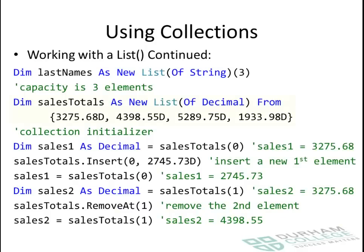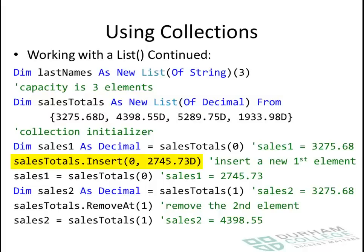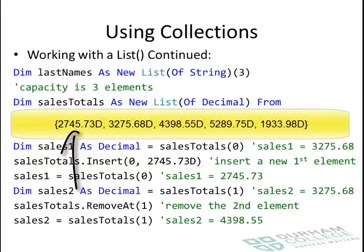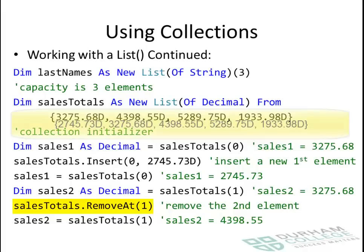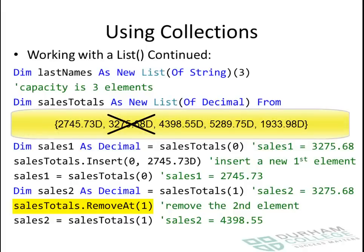Here's a fairly long example that goes over the next two slides. It's looking at a sales totals list declared as a list of decimal numbers with four elements to start. On this line, we're inserting a new first element — at index 0, we're inserting 2,745.73. Now there are five things in the list in total. The next thing that happens is we're removing something at index 1, which removes the one originally in the first position: 3,275.68.